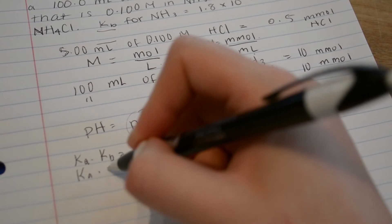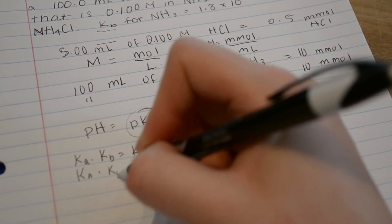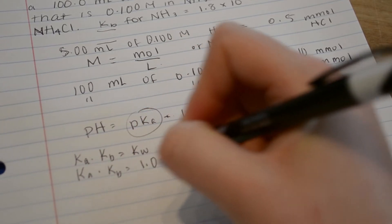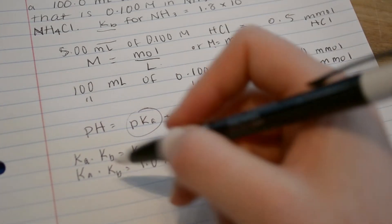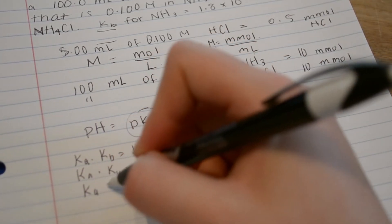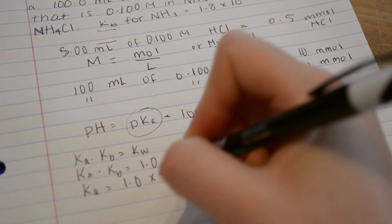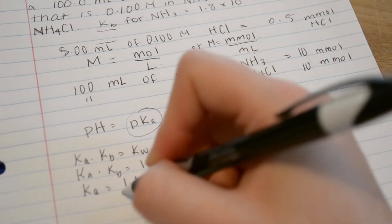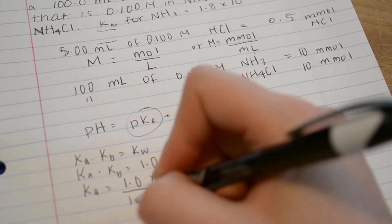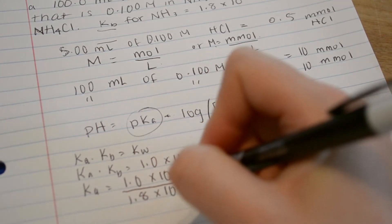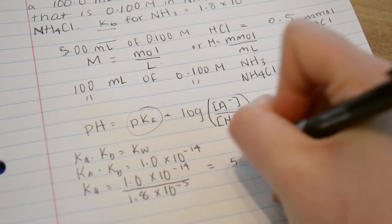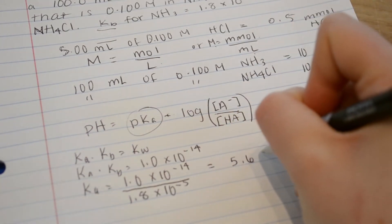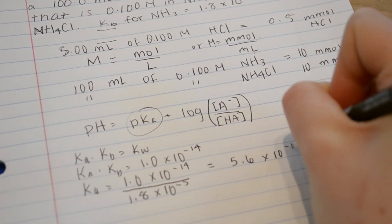KA times KB equals 1.0 times 10 to the negative 14th. And we're given KB. So KA equals 1.0 times 10 to the negative 14th all over 1.8 times 10 to the negative 5th, which is the KB, which will give us 5.6 times 10 to the negative 10th.